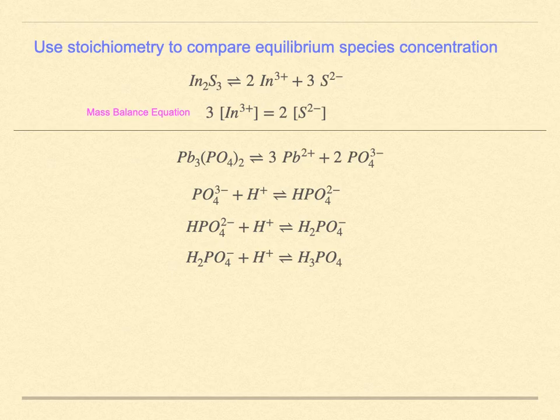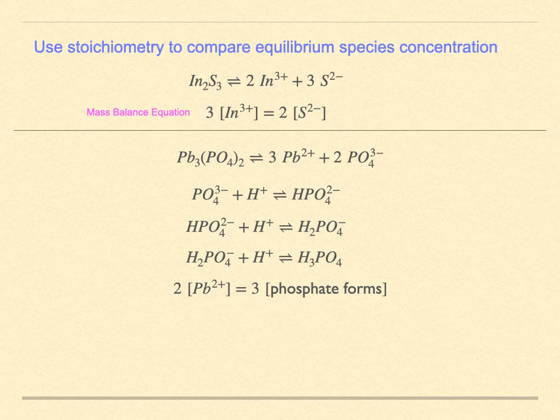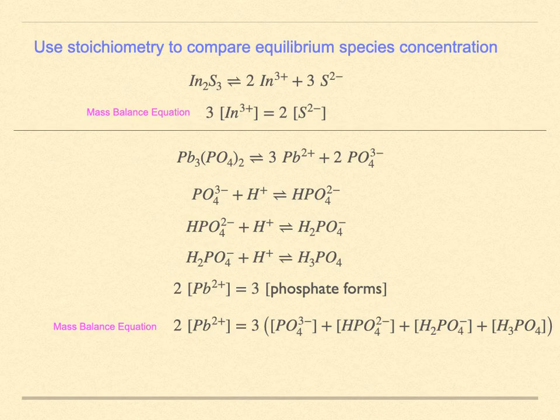The mass balance equation we would write down is this. There will be three lead ions for every two phosphate ions. To make them equal, we would multiply the lead concentration by two while multiplying the phosphate concentration by three. However, the phosphate can appear in many different forms after reacting with water. So the sum of the various phosphate species must together be multiplied by three.